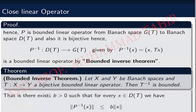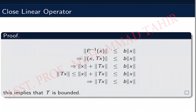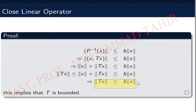Since P inverse of x equals (x, Tx), we have the norm of (x, Tx) less than or equal to B times the norm of x, which means the norm of x plus the norm of Tx is less than or equal to B times the norm of x. Therefore, the norm of Tx is less than or equal to B times the norm of x. This shows that T is a bounded operator, completing the proof of the closed graph theorem: if X and Y are both Banach spaces and the graph and domain of T are closed, then every closed linear operator is bounded.